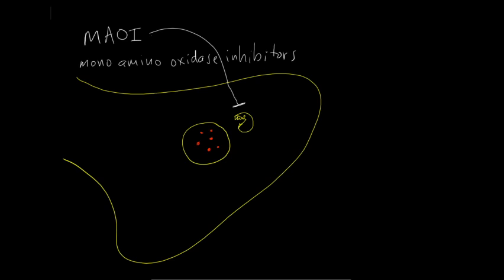There are actually two types of MAO. There's type A and type B. And type A is specific for 5-HT and noradrenaline.